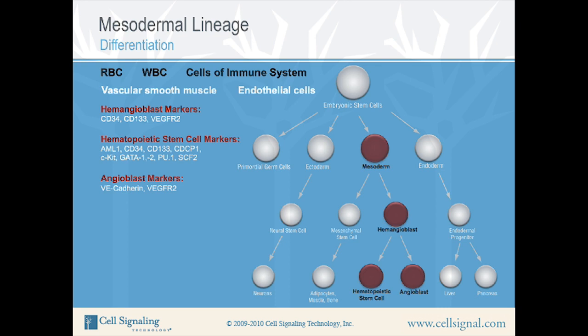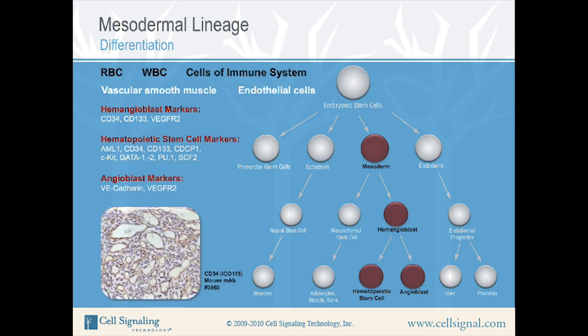In the figure below, IHC analysis shows expression of CD34 in human capillary hemangioma. Hemangioma is a benign tumor of the endothelial cells, which are those lining blood vessels. In this figure, these are the cells of the capillary. Note the presence of brown stain surrounding the vessel tubules.